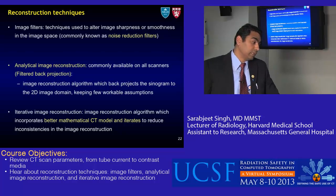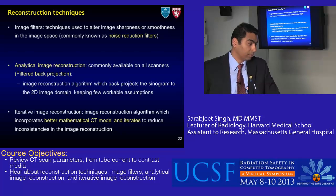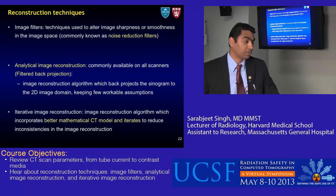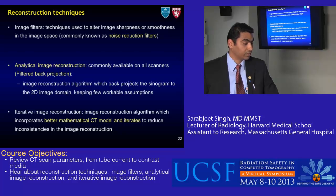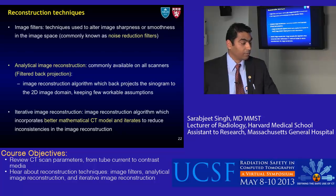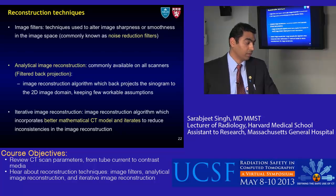Next, reconstruction techniques. Several new techniques are coming to market, so it's important to understand their definitions. Image filters are techniques used to alter image sharpness or smoothness in the image space, commonly known as noise reduction filters. Analytical image reconstruction — filtered back projection (FBP) — is the standard technique available on all scanners. FBP is an image reconstruction algorithm that back-projects the sinogram to the 2D image domain using workable mathematical assumptions. It's a fast technique that has served well for the past 40 years.